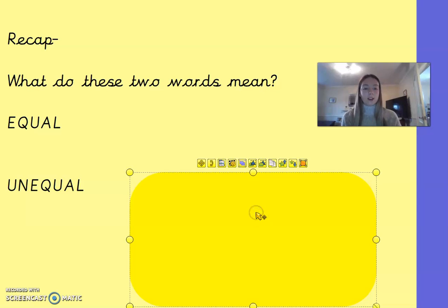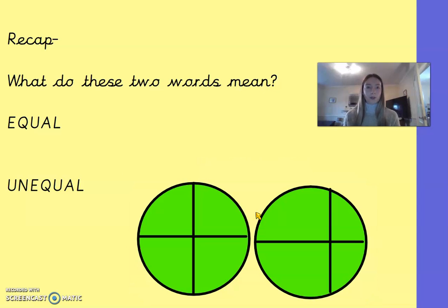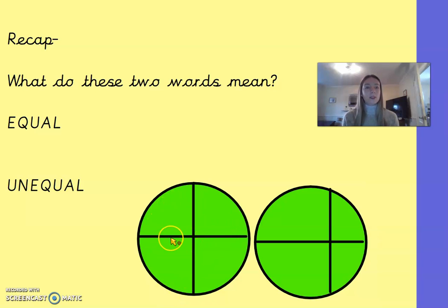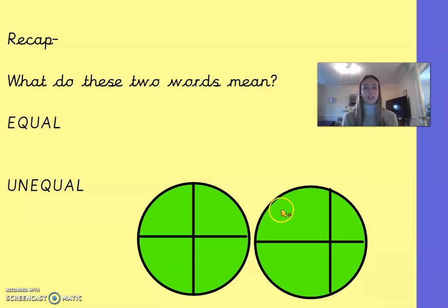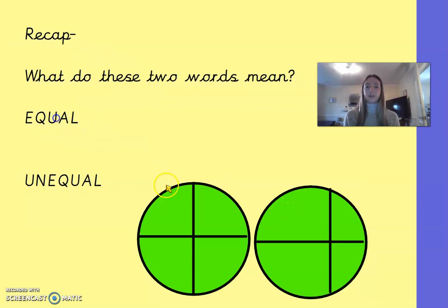Yesterday we used two pictures to help describe what these words mean. The first circle is equal because equal means the same, identical, exactly the same — and this circle has been split into four equal parts. The second circle is unequal because these parts are smaller and those parts are bigger; they are not the same size.